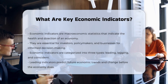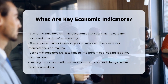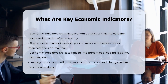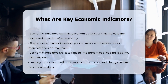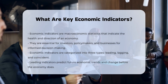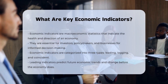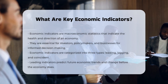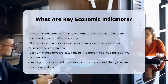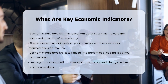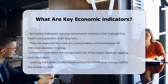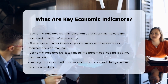Economic indicators can be categorized into three main types based on the time period they reflect. Leading indicators are forward-looking and can predict future economic trends. Examples include the yield curve, which calculates returns on treasury bonds, and the Consumer Confidence Index, which reflects savings and consumption patterns. These indicators change before the economy as a whole changes, making them useful for predicting future economic movements.